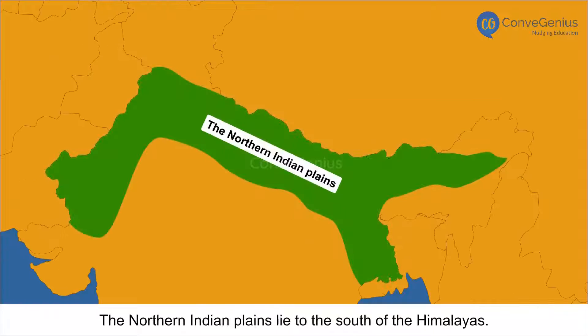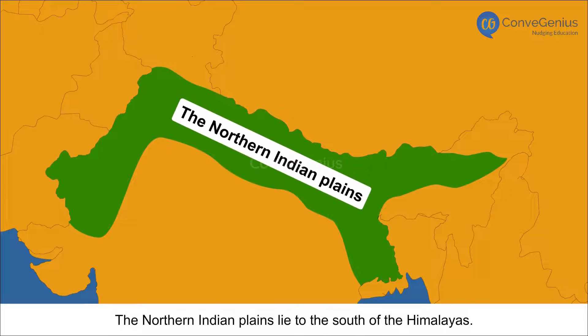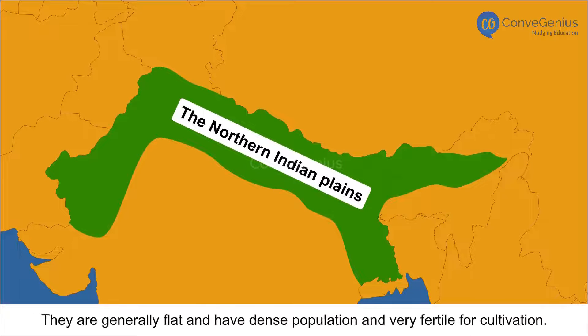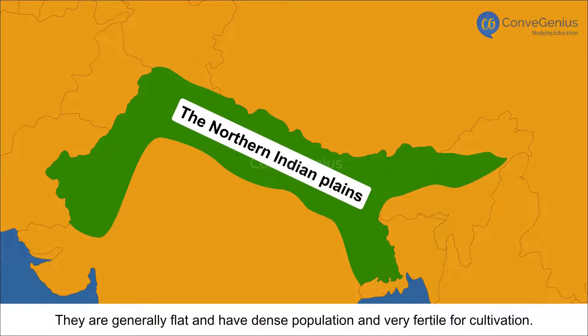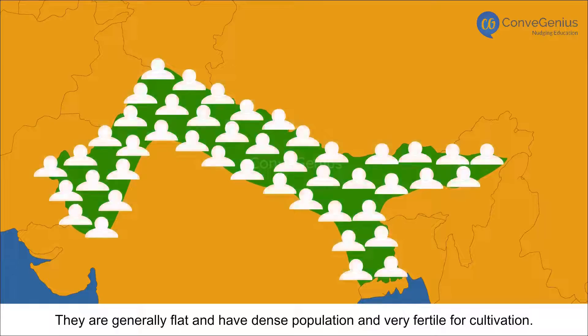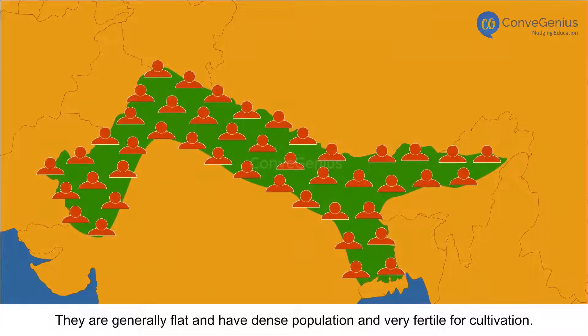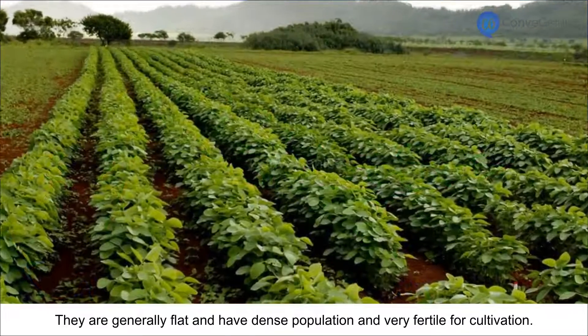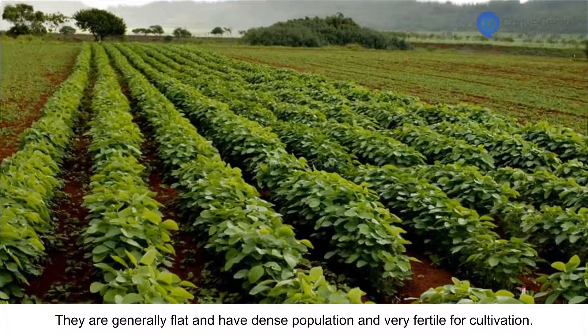The northern Indian plains lie to the south of the Himalayas. They are generally flat and have dense population and are very fertile for cultivation.